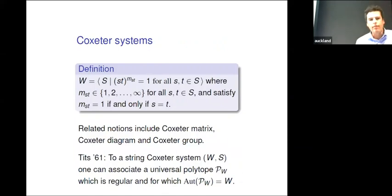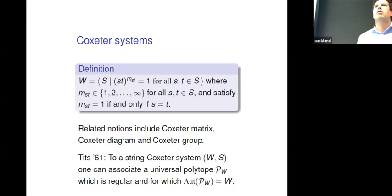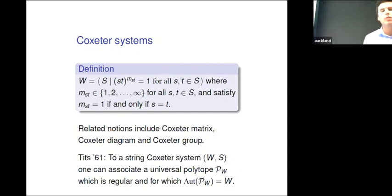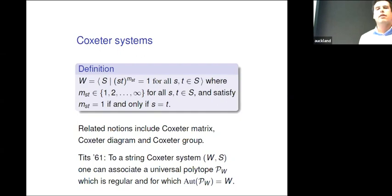A Coxeter system is a group together with a distinguished generating set S, where the generators are subject to certain relations: they are involutions, so all of them squared equal one. You also need that ST raised to a certain power M_ST gives one, where M_ST is an integer — it could be infinite, meaning there is no relation between S and T, but it could be three or four. Related notions include the Coxeter matrix, where you store these M_ij values in a matrix, Coxeter diagrams which are a graphical depiction, and the Coxeter group.